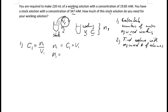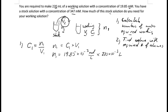If we put in the numbers, n1 equals the concentration of the working solution, which is 19.85 millimolar — so we write 19.85 times 10 to the minus 3 mole per liter — times the volume, which is 220 milliliters, so 220 times 10 to the minus 3 liters. The liters cancel out and we are left with moles. This gives us the number of moles we want in our working solution.